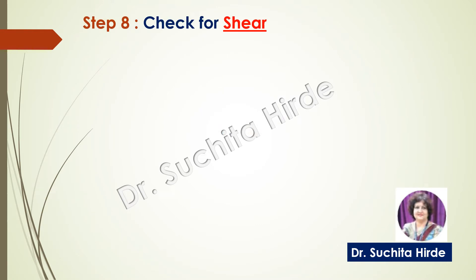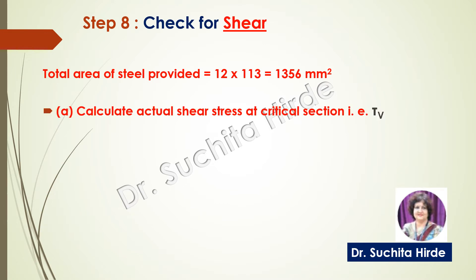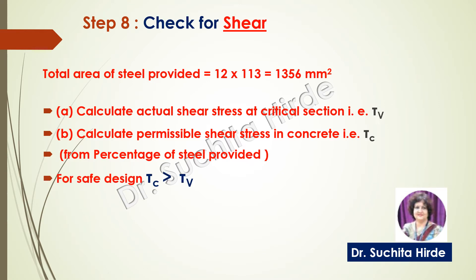To check the footing for shear, with the calculated area of steel of 1356 millimeter square, we first calculate the actual shear stress at the critical section, denoted by tau_v. Then we calculate the permissible shear stress that concrete can take, denoted by tau_c, which is calculated from the IS code based on the percentage of steel provided. For safe design, the shear carrying capacity of concrete must be more than the actual shear stress at the critical section.